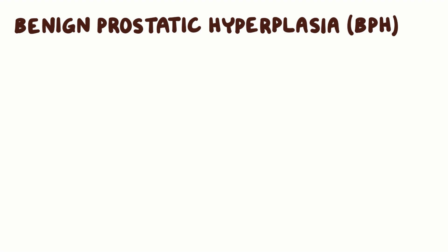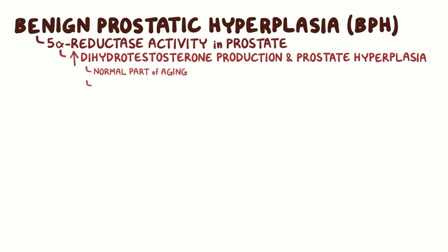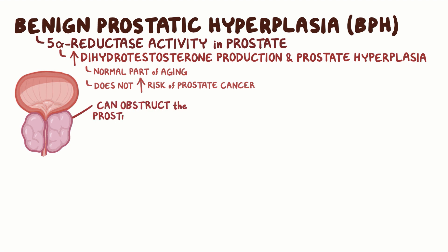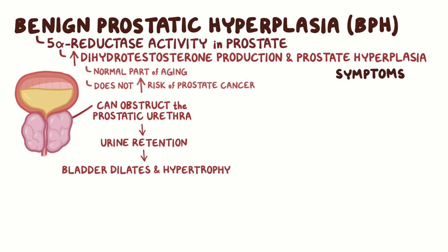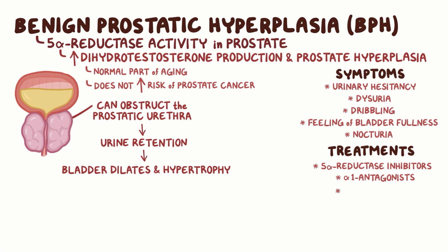As a quick recap: benign prostatic hyperplasia, or BPH, is a condition caused by increased 5-alpha-reductase activity in the prostate, which leads to increased dihydrotestosterone production and prostate hyperplasia. This is considered a normal part of aging and doesn't increase the risk of developing prostate cancer. The enlarged prostate gland can obstruct the prostatic urethra, leading to urine retention, causing the bladder to dilate and hypertrophy. Symptoms of BPH include urinary hesitancy, dysuria, dribbling, feeling of bladder fullness, and nocturia. BPH treatments include medications like 5-alpha-reductase inhibitors, alpha-1 antagonists, or a TURP procedure.